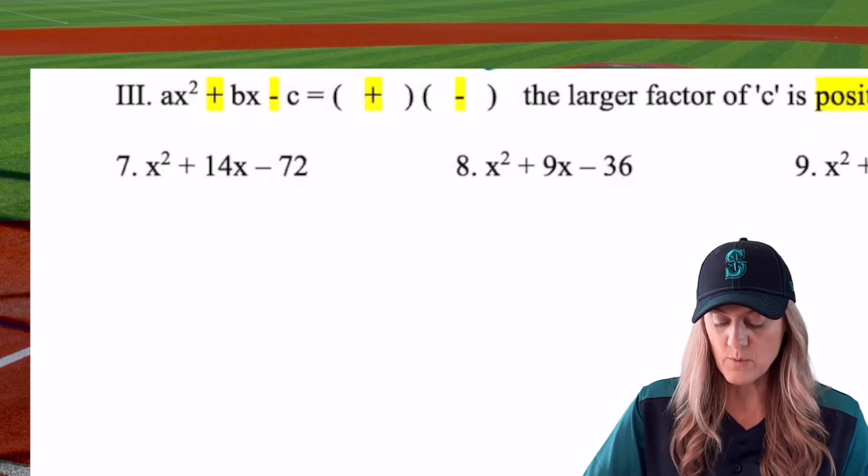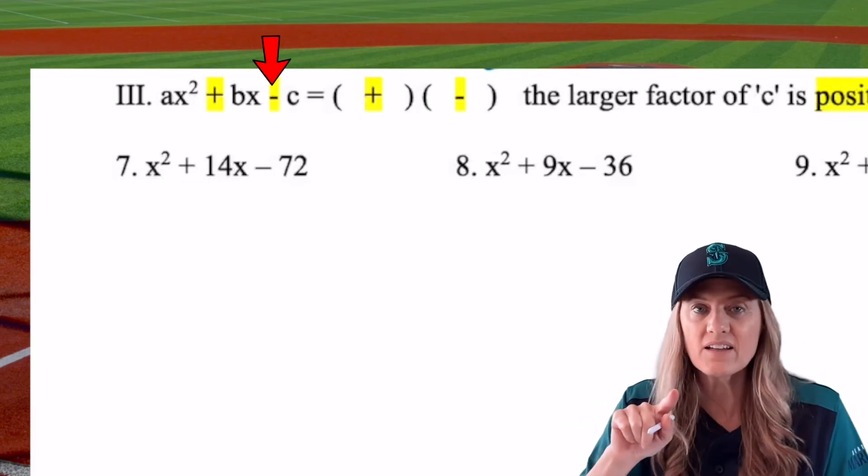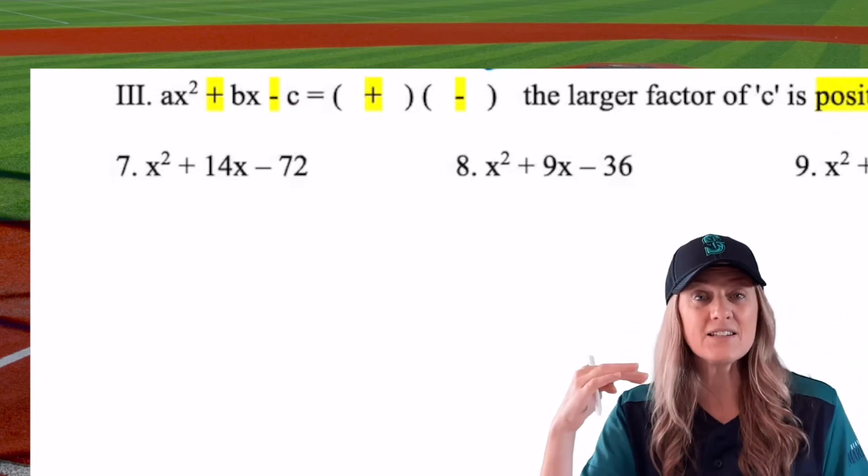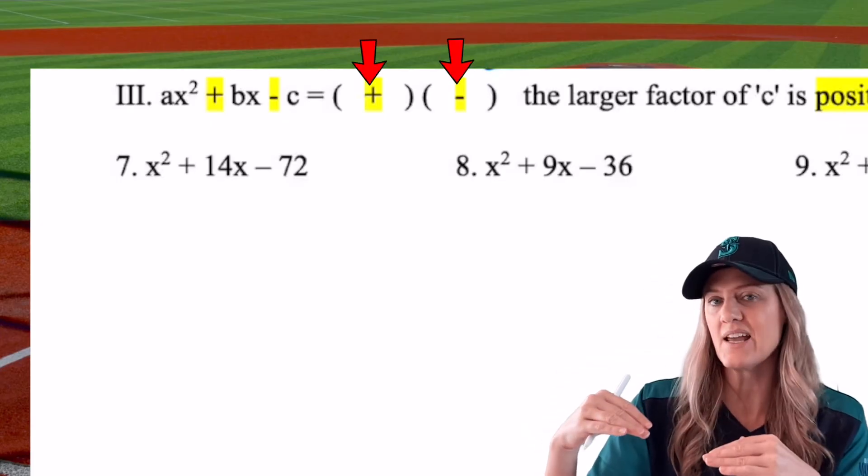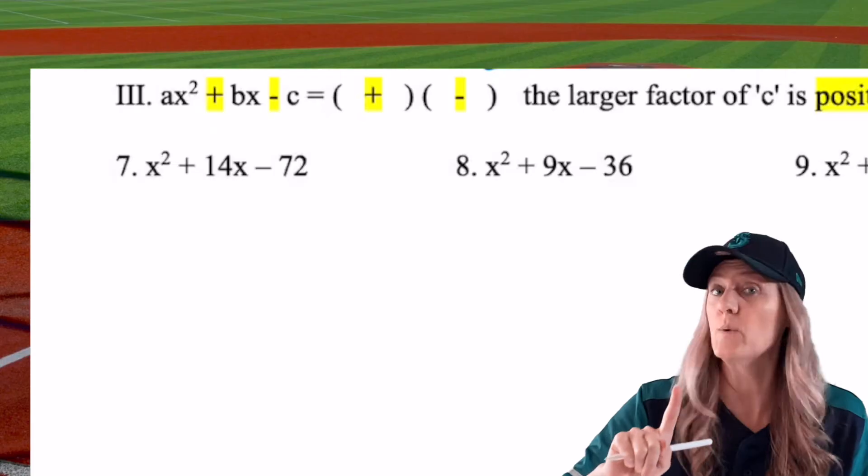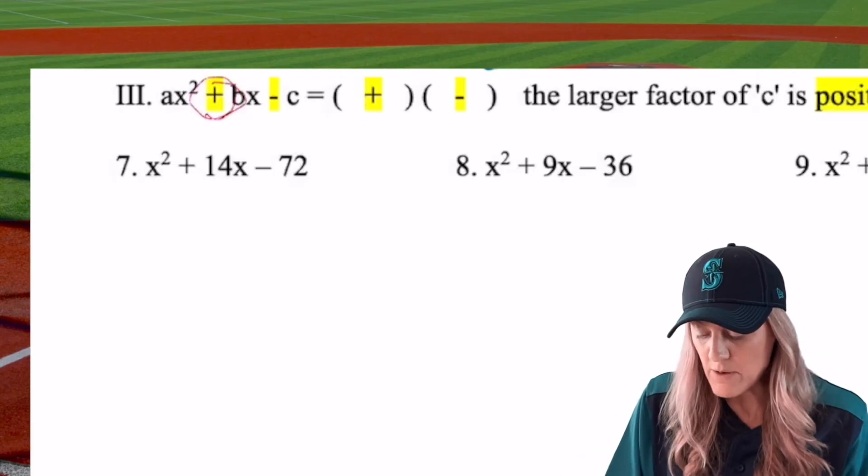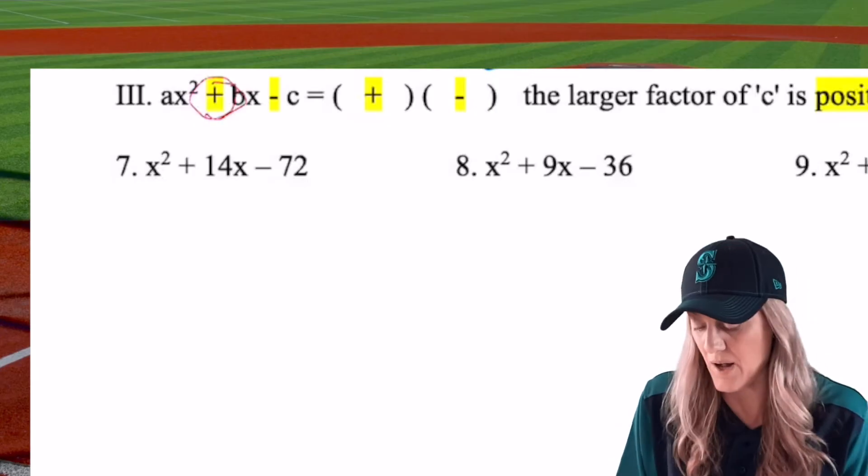Here's another situation. Notice this time we have ax squared plus bx minus c. So c is negative. What is that going to do to our factors, the two binomials that we write? Well, if I need to multiply to be a negative, that means one is positive, one is negative. Seems simple. There's one more connection we can make though. If b is positive, then I would want to make the larger factor or the larger product positive.